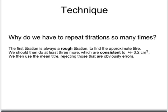So you might do a rough titration first to give you an idea of what volume you need to add and then subsequently do two or three which have got you a consistent volume. And we call these consistent titers.